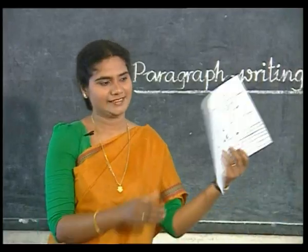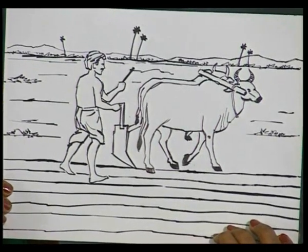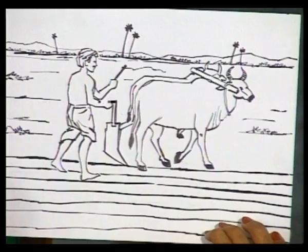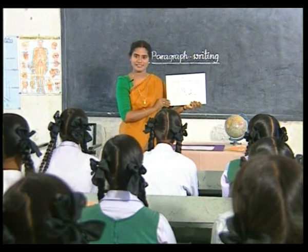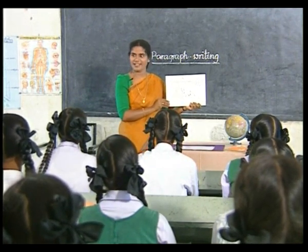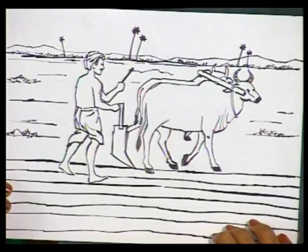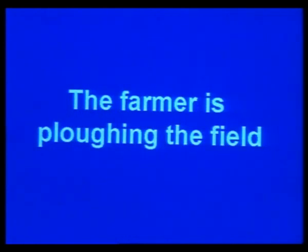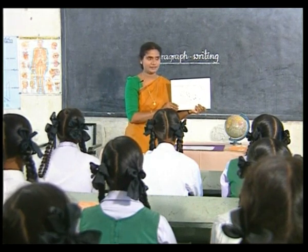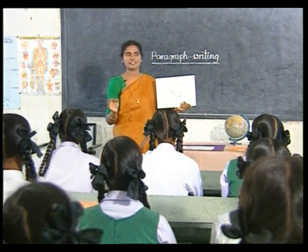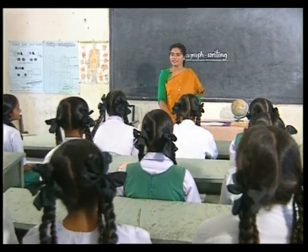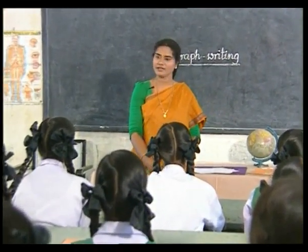If you write sentences and put them around a central idea, all such sentences would form a paragraph. Now look at this picture — who is the man here? He is a farmer. What is he doing? He is plowing. Where is he? He is in the field. So we have three important keywords: farmer, plowing, field. The farmer is plowing the field. You have used the words farmer, plowing, and field as clues to make a sentence.